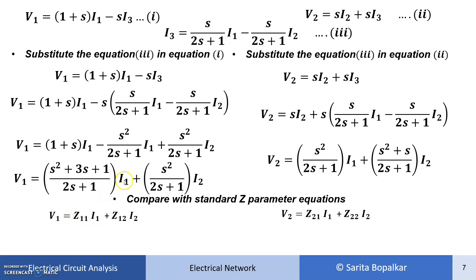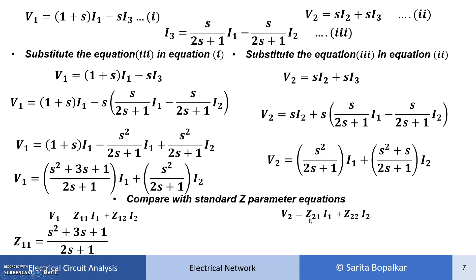Comparing V1 in terms of I1 and I2 with V1 = Z11·I1 + Z12·I2: the coefficient of I1 gives Z11, and the coefficient of I2 gives Z12. Similarly, from the V2 equation, the coefficient of I1 gives Z21 and the coefficient of I2 gives Z22.